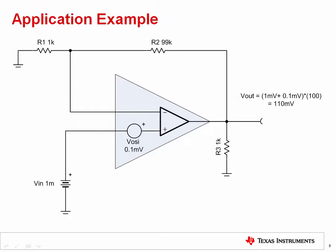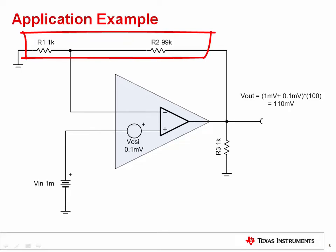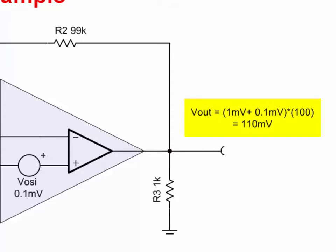In this application example, we will see how to calculate the output voltage error from the offset voltage. Consider offset voltage as a DC voltage source in series with the non-inverting input of the op amp. We have a 0.1 millivolt, or 100 microvolt, offset in this case. The signal source is a very small input of 1 millivolt, so the offset will generate a fairly significant error. The gain is configured as 100 volts per volt, calculated as R2 over R1 plus 1. The total output voltage is the series combination of the offset and the input signal, 1 millivolt plus 0.1 millivolts, multiplied by the gain of 100, giving us 110 millivolts. The offset accounts for about 10% error.